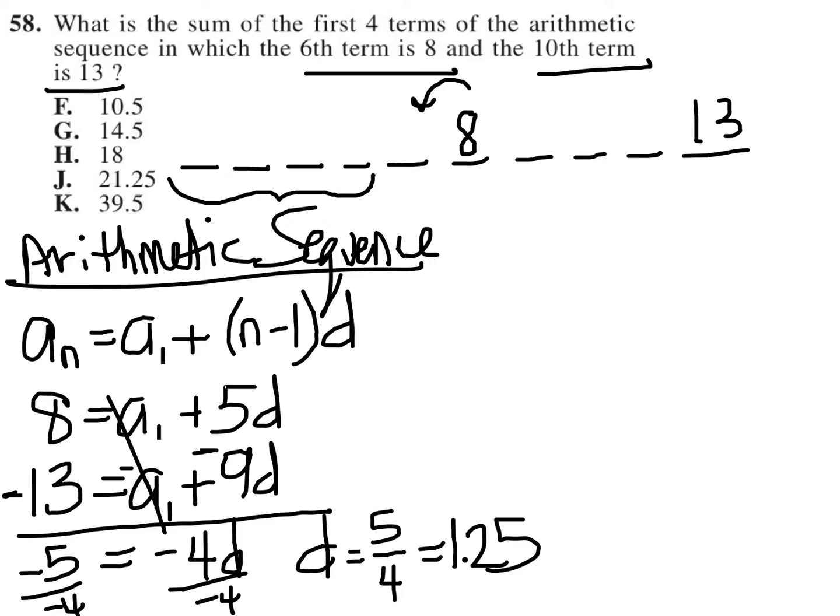So 8 minus 1.25 is 6.75, 6.75 minus 1.25 is 5.5, doing that again I get 4.25, doing that again I get 3, and once again I get 1.75.